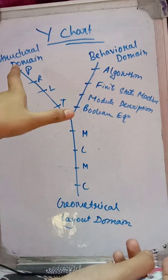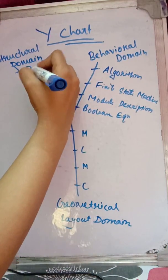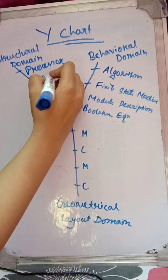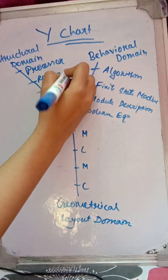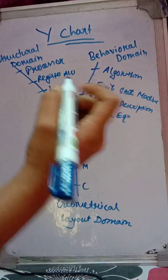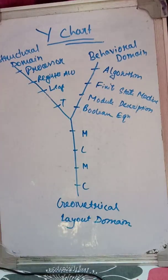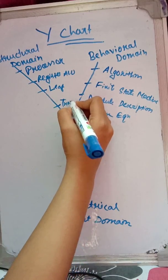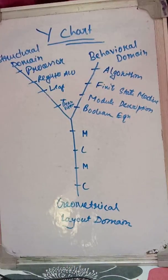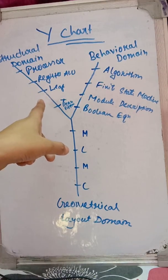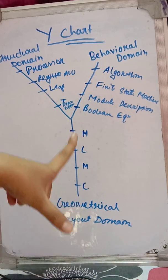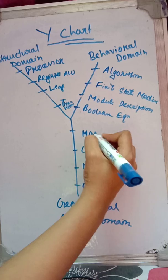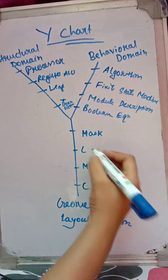For the structural domain: P is for Processor, R is for Register, L is for ALU (Arithmetic Logic Unit), and T is for Transistor — giving us Processor, Register, ALU, and Transistor.